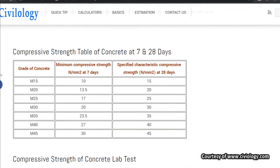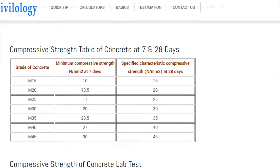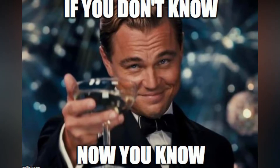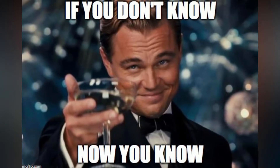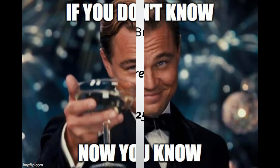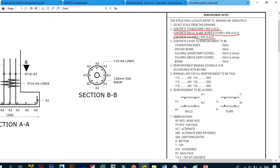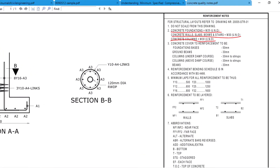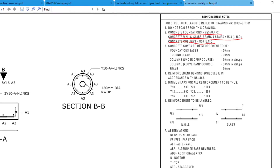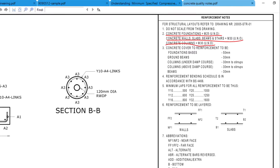Now that we know what each grade means, the tricky part is that no one actually writes 'I want grade 25 concrete with a compressive strength of 25 MPa or 3,625 pounds per square inch.' Instead, what you will find written is C25, M25, or C25/30 — and this is when some of you may start to get confused as to what grade you are being asked to produce.